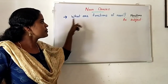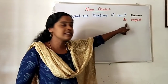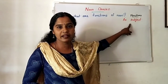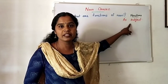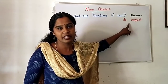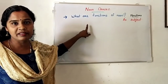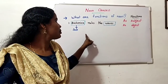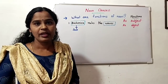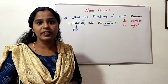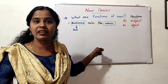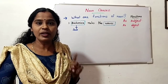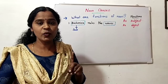The first function of a noun is that it acts as a subject. See the example: 'Britannica rules the waves.' In this sentence we can see two nouns — Britannica and waves. If you ask 'who or what' and get an answer, that is the noun acting as subject.